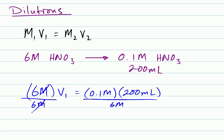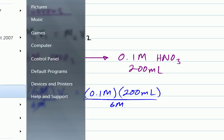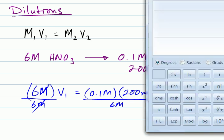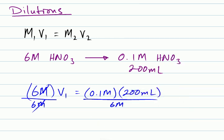And you punch this in the calculator, and what do you get? Let's see, let's bring up my calculator, because I can't do this in my head. So, you get 0.1 times 200 milliliters, divided by 6 molar, and you get 3.33.